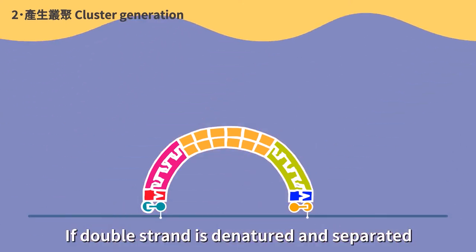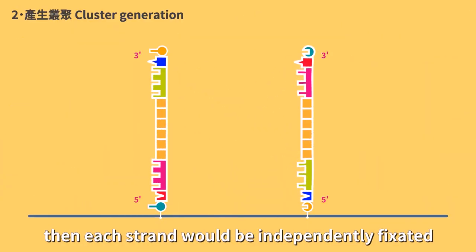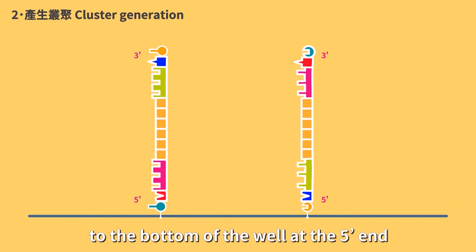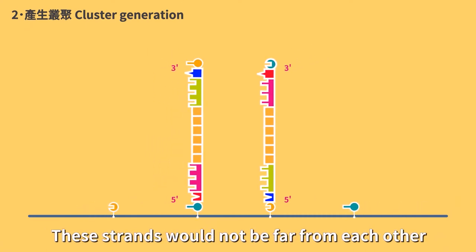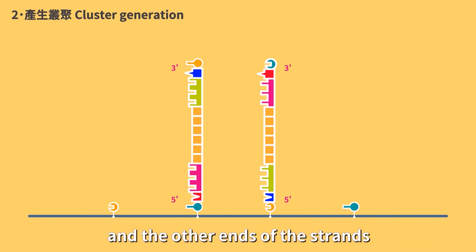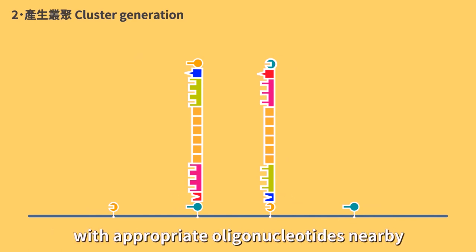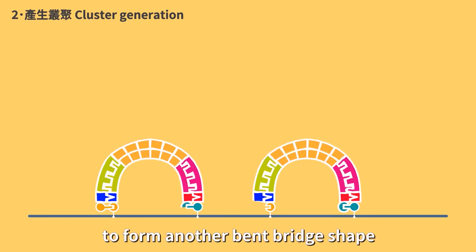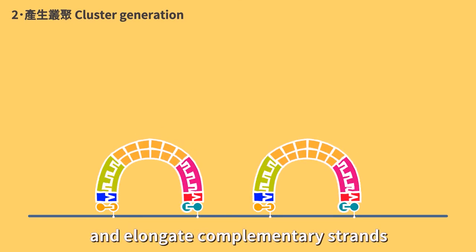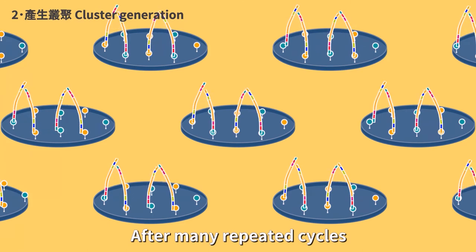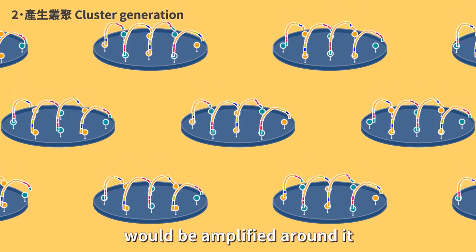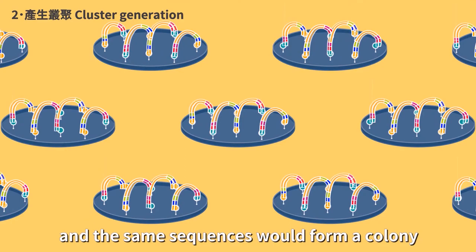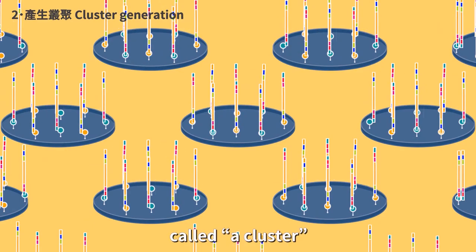If double strand is denatured and separated, then each strand will be independently fixated to the bottom of the well at the 5' end. These strands will not be far from each other, and the other ends of the strands can continue to bind with appropriate oligonucleotides nearby to form another bent bridge shape and elongate complementary strands. After many repeated cycles, each segment of DNA would be amplified around it, and the same sequences will form a colony called a cluster.